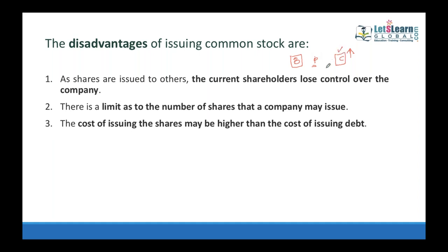Bondholders receive their interest regardless of profit. Preference shareholders receive their dividend. But common shareholders receive only when IACS is positive — income available to common shareholders. If that is positive, some amount may be distributed. So common share capital is risky to the investor, and raising common share capital is more costly than raising debt.